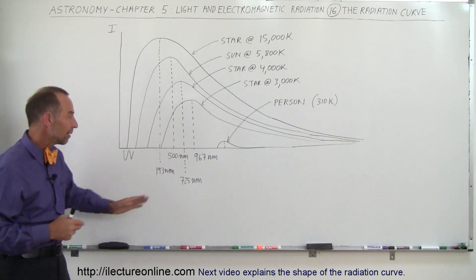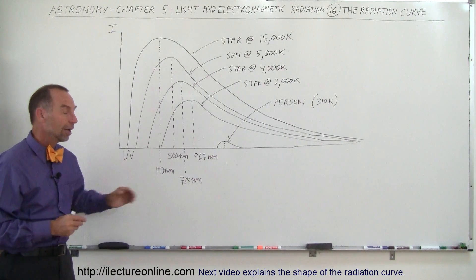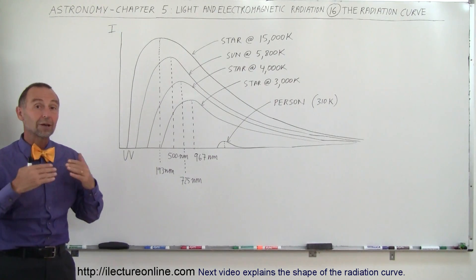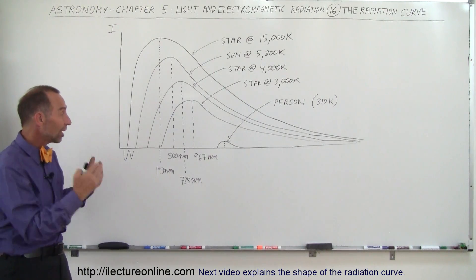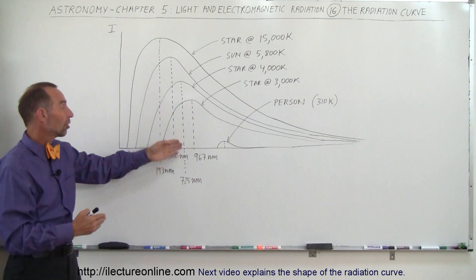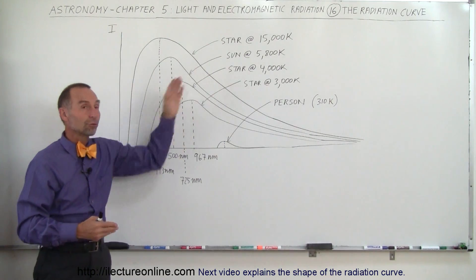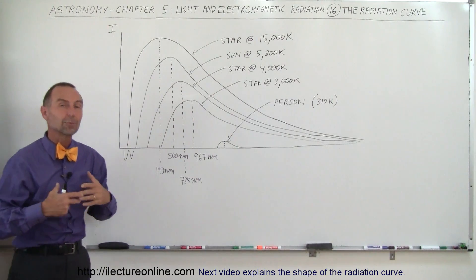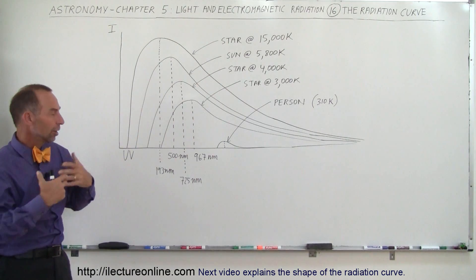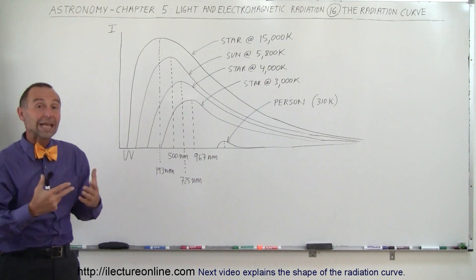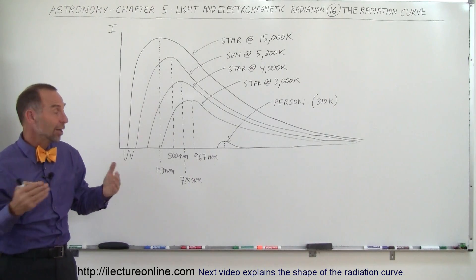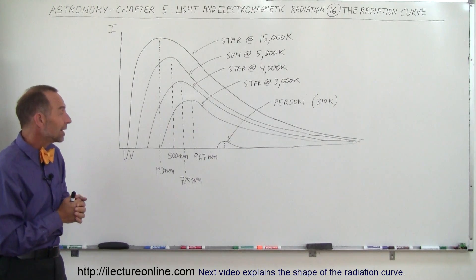That's the near-infrared range. So a large percentage of the radiation from a star with a temperature of 4,000 Kelvin is actually infrared radiation.